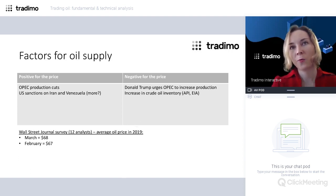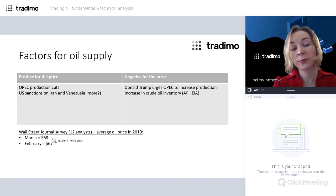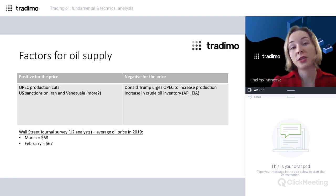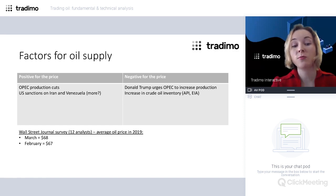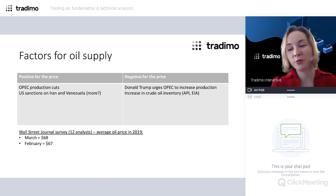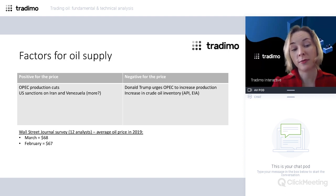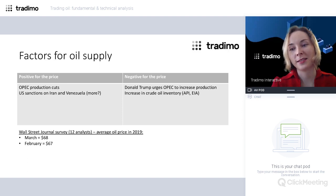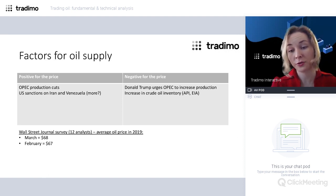To estimate what the market and experts think, the Wall Street Journal surveyed analysts from 12 large financial institutions. In February, they expected the average oil price in 2019 to be $67. In March, that estimate increased to $68 — not a big increase, but a positive trend in expectations. This is a sign that experts are optimistic. So we have discussed the various supply-related things — now what is happening with demand?